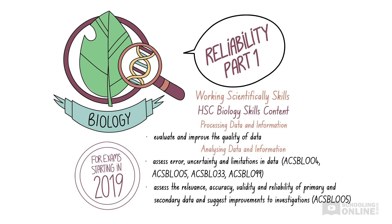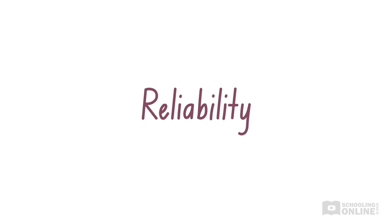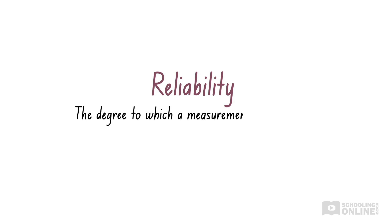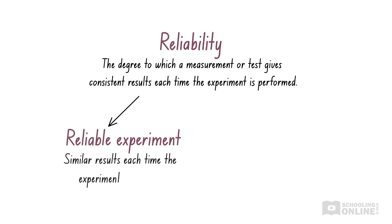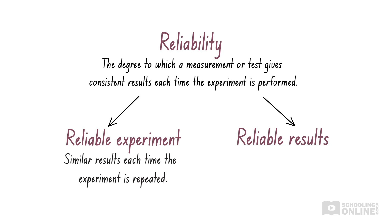Like accuracy, reliability is an important aspect of science experiments. Reliability is the degree to which a measurement or test gives consistent results each time the experiment is performed. This means a reliable experiment produces similar results each time it is repeated. We can also look at the reliability of experimental results — if the results are similar to each other, then they are reliable.